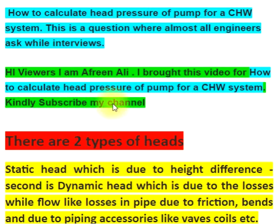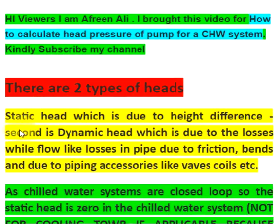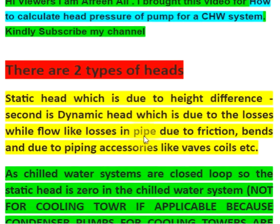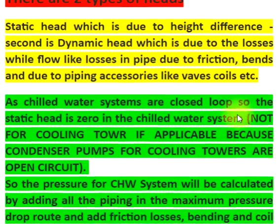There are two types of head. First is static head, which is due to height difference. Second is dynamic head, which is due to losses while flowing — like losses in pipes due to friction, bends, and piping accessories like valves, coils, etc.